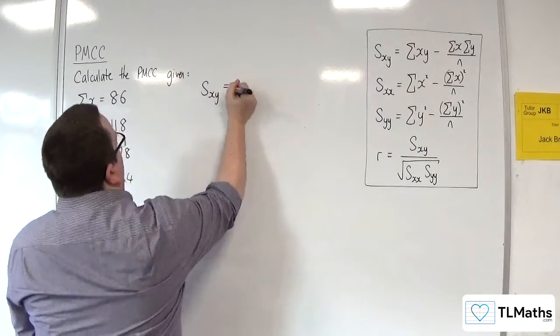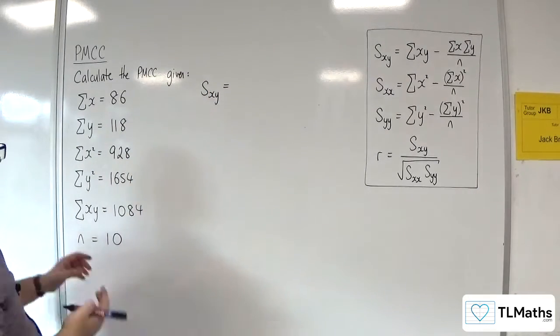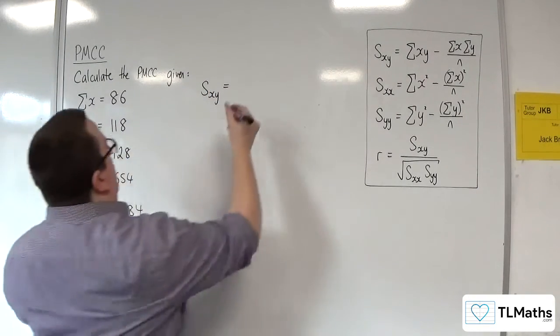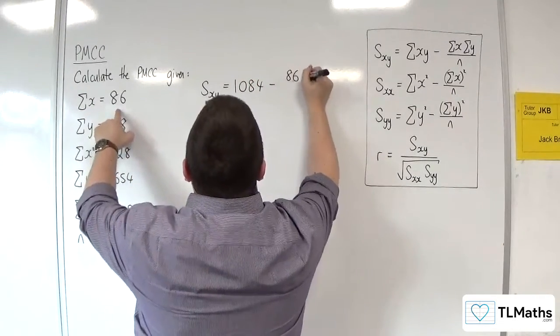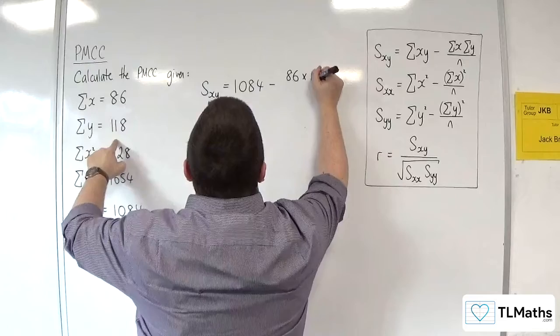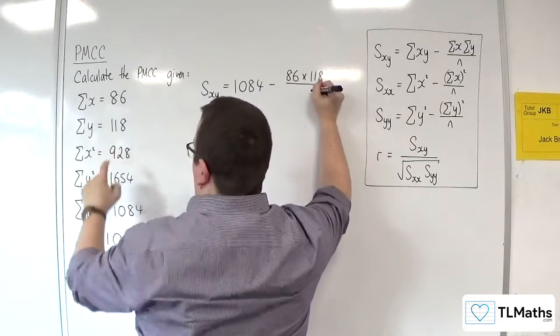Sxy is the sum of xy, so 1084, take away the sum of x, 86, times the sum of y, 118, divided by n, which is 10.